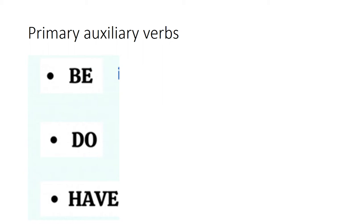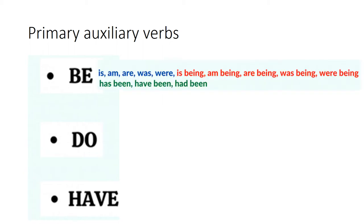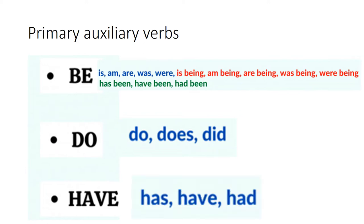Primary auxiliary verbs जो हैं वो be, do और have हैं. 'Be' जो है वो is, am, are, was, were में change हो जाता है. 'Do' जो है वो do, does और did — do present के लिए और did past के लिए. और 'have' — has, have, had. एक बंदे के लिए has, more than one के लिए have, और past के लिए had.